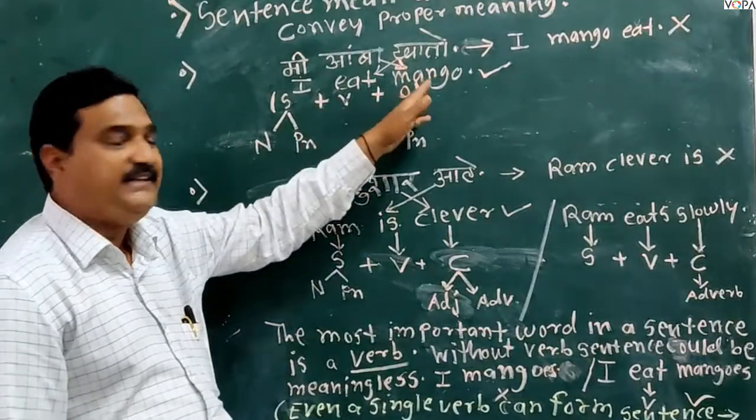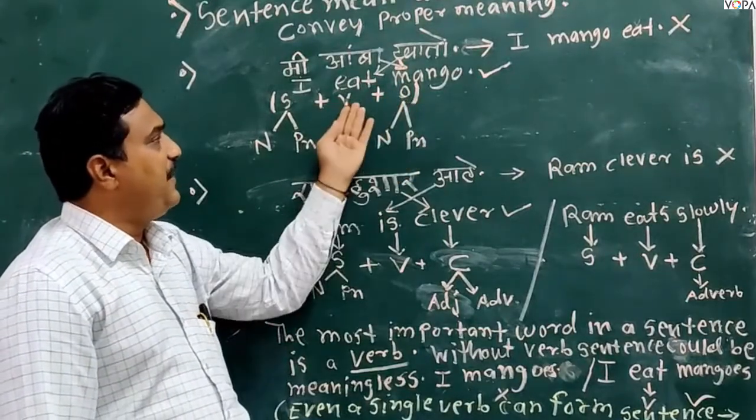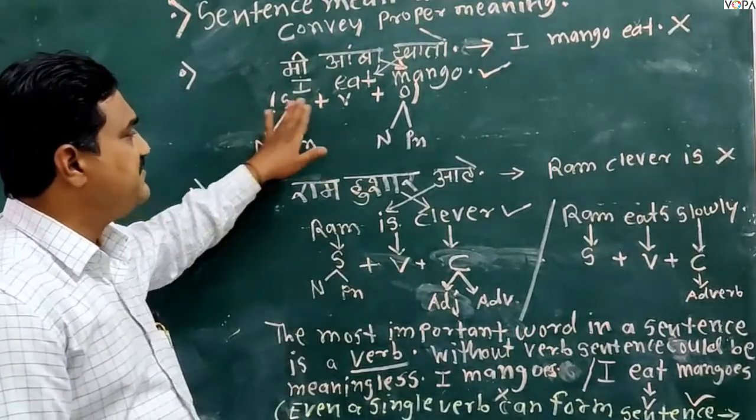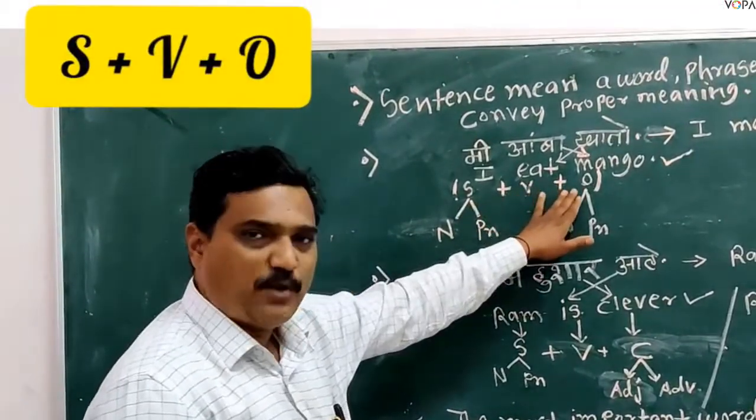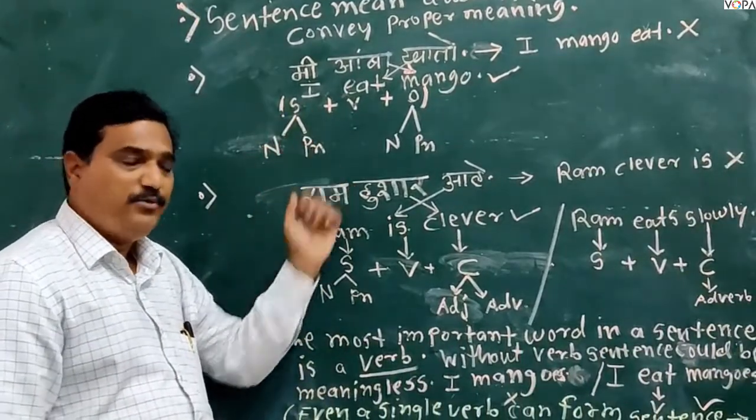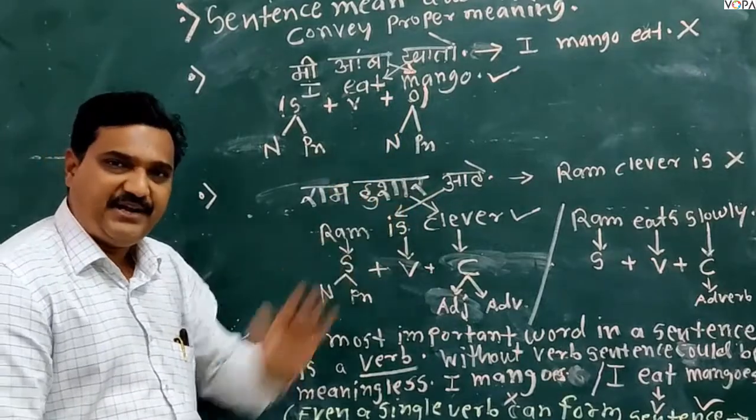Then dusri kriya is called object. Object comes after word. So ideal sentence formation of the sentence is subject plus word plus object. And first, subject could be noun and pronoun, and object also could be noun and pronoun.